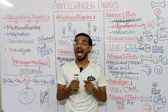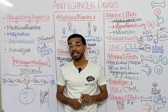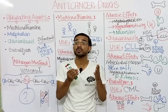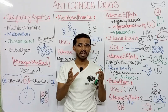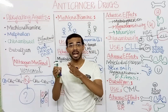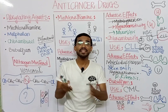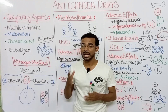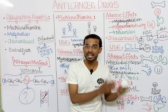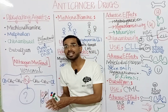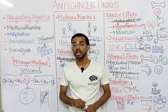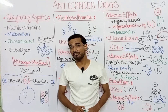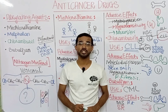An important thing to remember about all these drugs is that they can cause leukemia — they are leukemogenic. It is quite remarkable that drugs used in the treatment of cancer can also cause secondary cancer. So these anti-cancer drugs, while used to treat cancer, can also cause secondary cancer as well. If you still have any questions, you may ask in the comment section. Thank you so much.